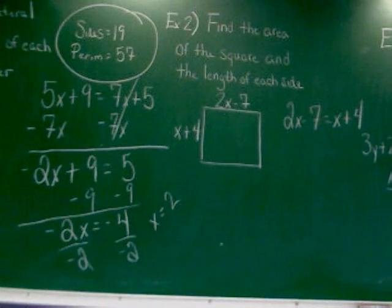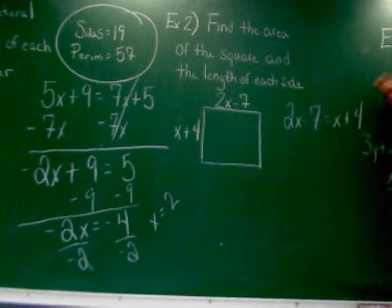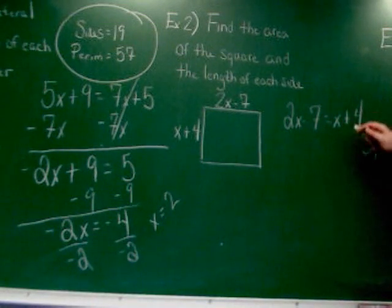So what do I want to move first in this problem? Hunter? The x to the left. Right. I'm going to move the x to the left side. It's positive. The opposite is a negative. Negative looks like subtraction.